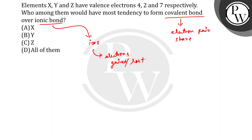So sharing of electrons versus gain or loss of electrons — why does either process happen? The main driving force is the octet rule. Each element wants its valence shell to have 8 electrons, so that the valence shell resembles the noble gas configuration.